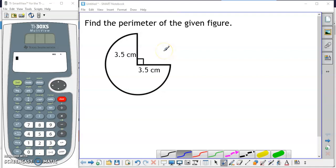We want to find the perimeter of the given figure. The figure is a circle with a portion missing. We know it is a circle because these two line segments are of equal length.